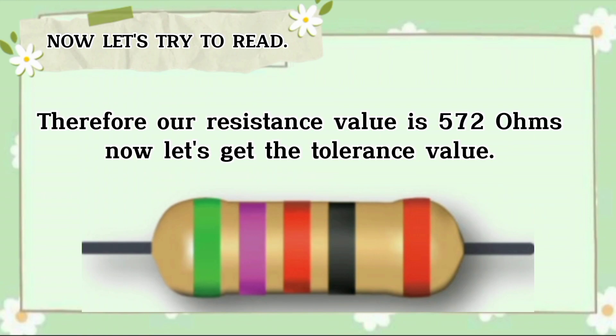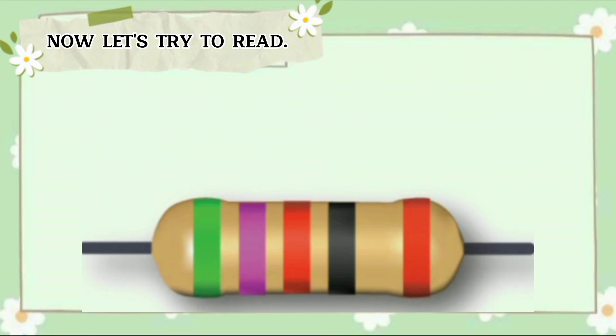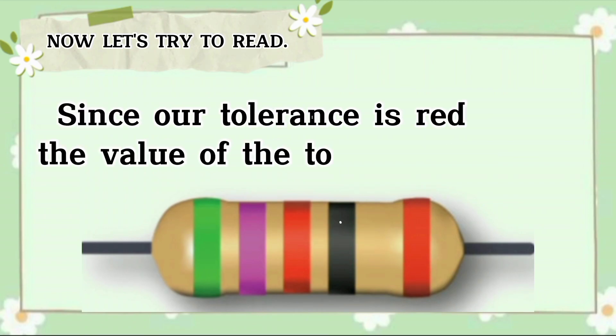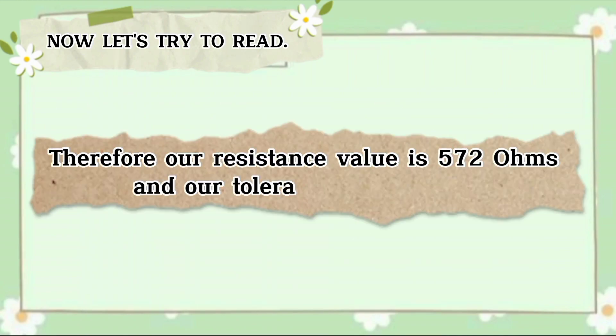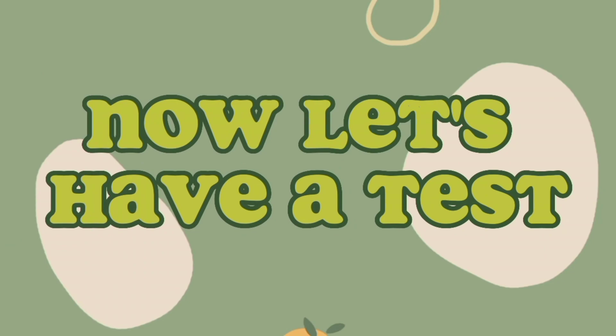Now let's get the tolerance value. Since our tolerance band is red, the tolerance value is 2%. Therefore, our resistance value is 572 ohms and our tolerance value is 2%.